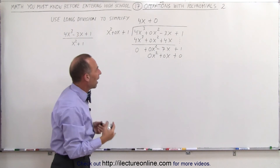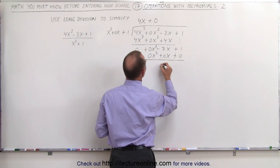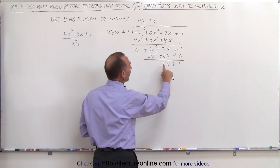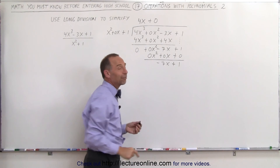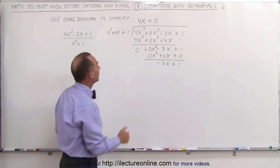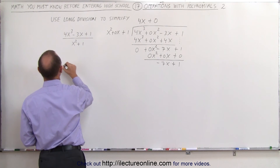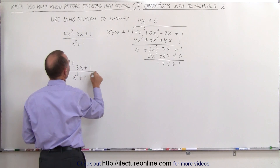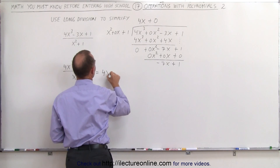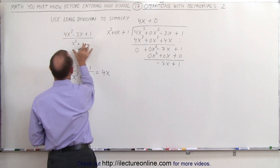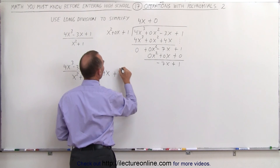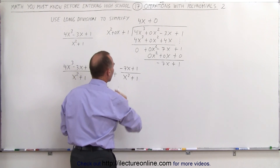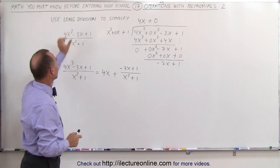Subtracting this from that, we get minus 7x plus 1. We're basically done, because x-squared no longer fits into minus 7x — the smallest exponent we need is x-squared and we no longer have one. The answer is that 4x-cubed minus 3x plus 1 divided by x-squared plus 1 equals 4x, plus the remainder quantity minus 7x plus 1 divided by the denominator x-squared plus 1. That is the quotient, or the result, of dividing this into that numerator. And that's how it's done.